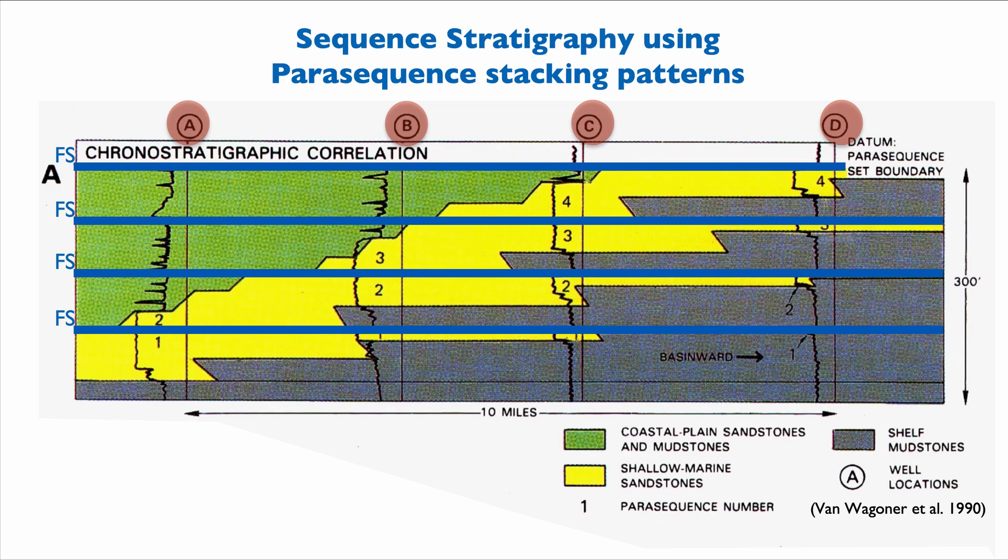For instance, sand number four with sand number four, sand number three with sand number three in wells D, C, and B. That gives you essentially this geometry of a relatively connected body of sand, the yellow color, but of course with some complication because some tongues of sands are inter-tongued within the basinal muds.